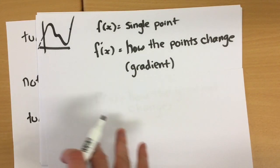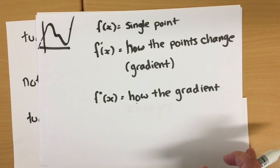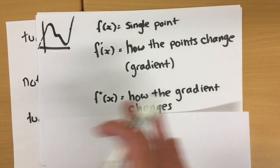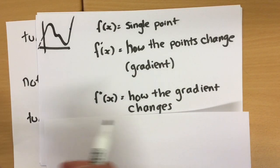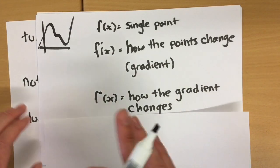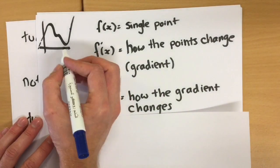So what we look at now is our second derivative, which is how the gradient changes. So what's happening to the gradient? Is the gradient getting steeper and steeper? Is it getting shallower? Is it turning positive? Is it turning negative? What's happening to the gradient on the graph?